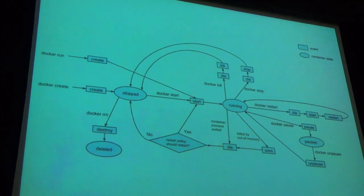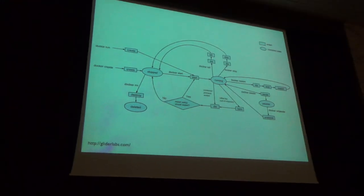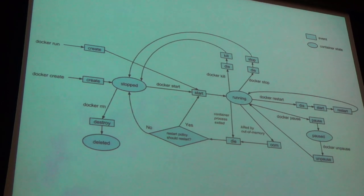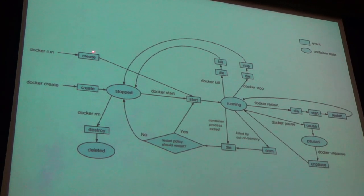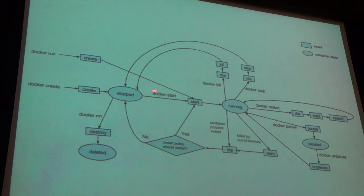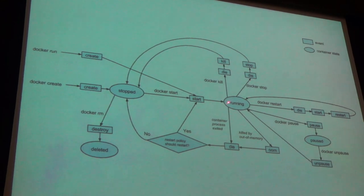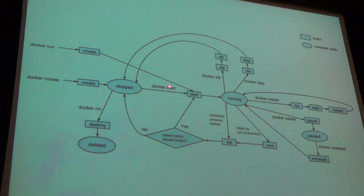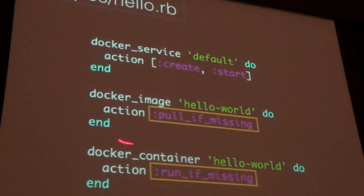Containers are process-oriented. You start a container — docker create — and it goes through a lifecycle. In the case of hello-world, it starts, runs, the process exits, and goes back. Every time Chef client runs it goes around this loop. To deal with that, what you actually want is a different action: 'pull_if_missing' or 'run_if_missing'.